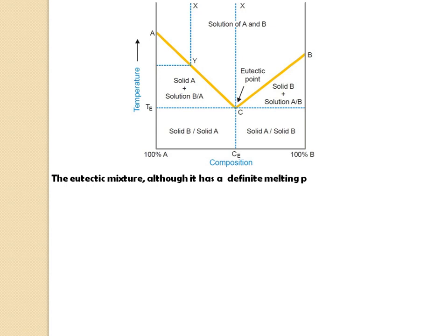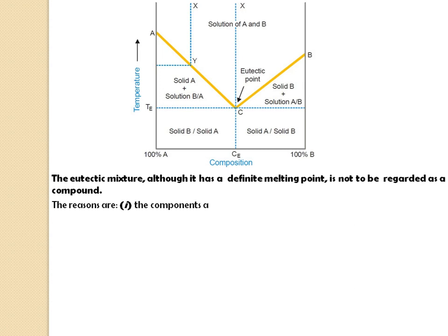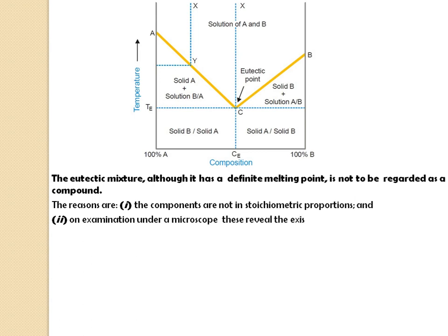Although the eutectic mixture has a definite melting point, it is not regarded as a compound. The reasons are: the components are not in stoichiometric proportion, and examination under a microscope reveals the existence of separate crystals of each component.